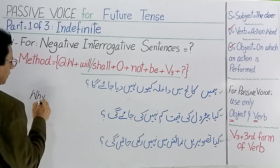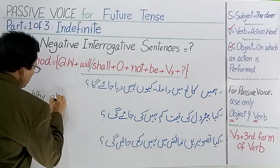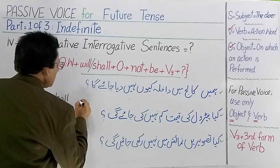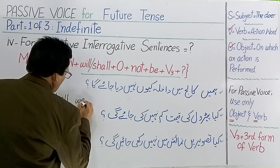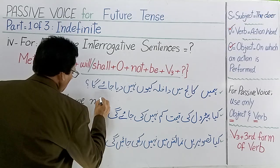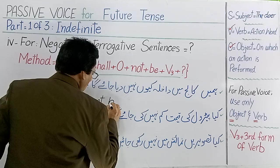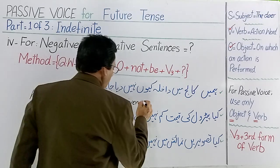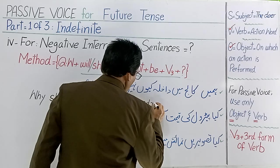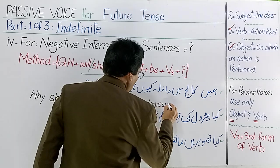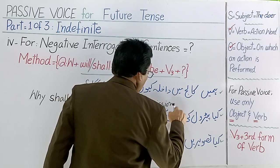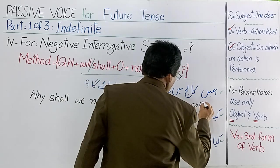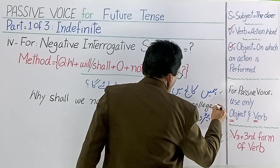Why — shall — why shall we — not — be — given. Given, third form: given admission in the college. Question mark.